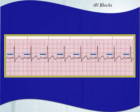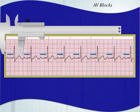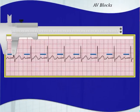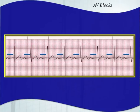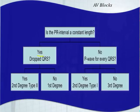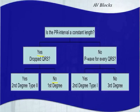Here's the first example — a first degree AV block. The PR interval is staying consistent throughout, and there are no P waves that lack a QRS complex. No dropped beats, so we have a first degree AV block.